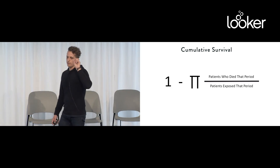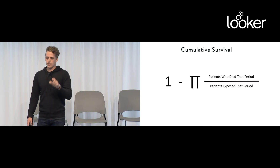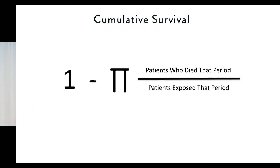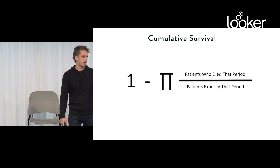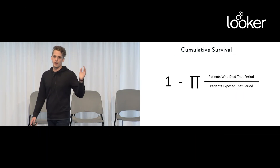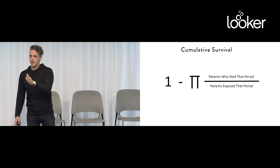Cumulative survival — this is basically what the math looks like. Capital Pi means cumulative product. All that we're going to do is take one minus the cumulative product of the marginal death rate. To drive the intuition home: think about flipping a coin. You flip a quarter one time — what's the chance of heads? It's 50%. Flip a quarter two times — what's the chance of both being heads? It's 50% times 50%, which is 25%. That's the idea behind the cumulative product for figuring out what the cumulative survival is at any given period.